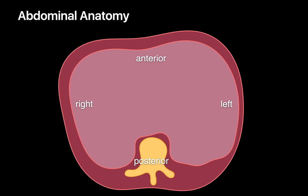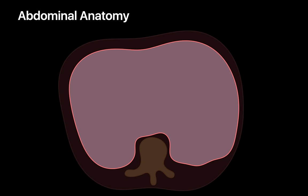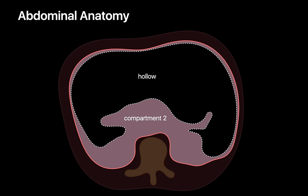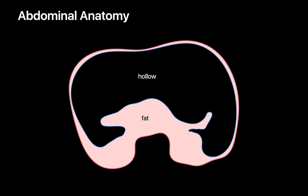Here's a simple axial cross-section diagram of the abdomen. If we ignore the abdominal wall and focus on the most essential part of the abdomen, we can fundamentally divide the abdomen into two compartments: one that's hollow and one that's fat-filled. We refer to the hollow compartment as the peritoneal cavity, and the fatty compartment as the retroperitoneum.